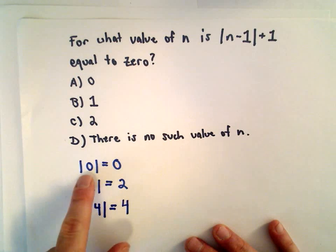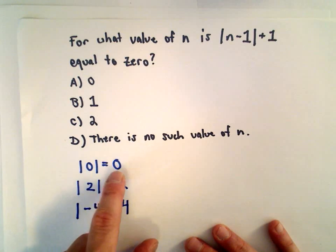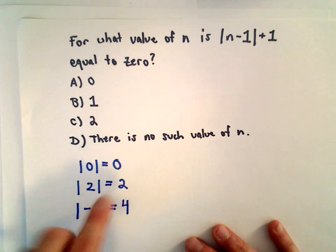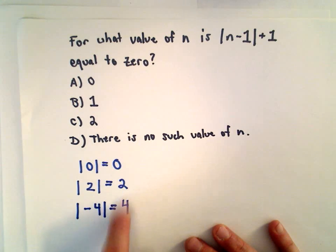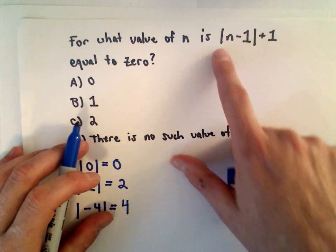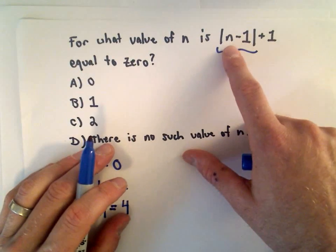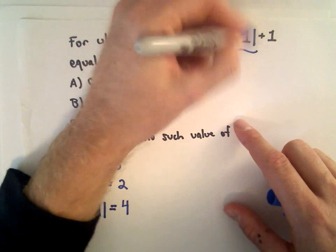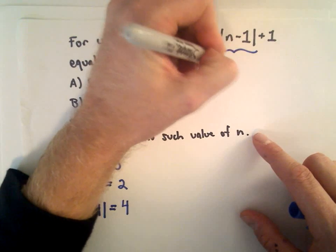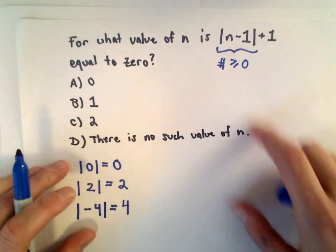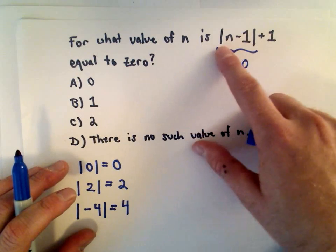The main thing to remember is that the absolute value is always going to give you either, after you simplify, it's either going to be a number that's 0 or larger. So just based on that, I know that the absolute value of n minus 1, no matter what value I substitute in for n, this absolute value is always going to give me a number that is greater than or equal to 0.